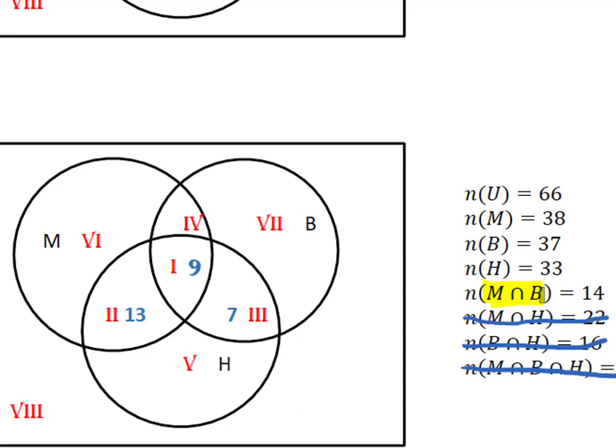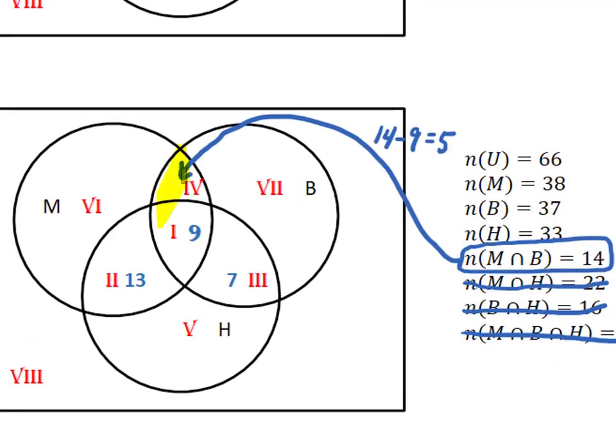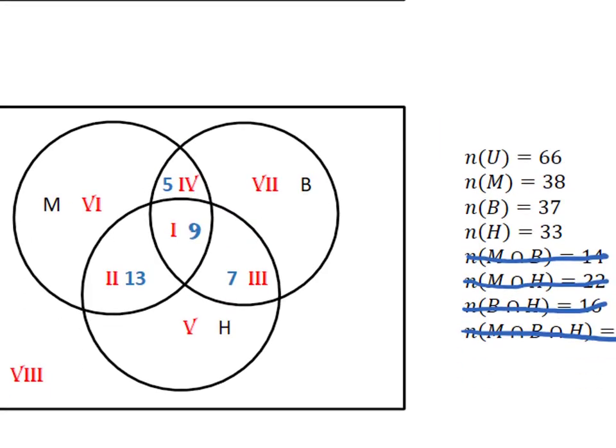Now we're going to focus in on M intersect B. M intersect B is comprised of regions 1 and 4. But we know that M intersect B has 14, 9 of which were already labeled in region 1. So 14 minus 9 equals 5 left in region 4. Label that region 4 to have 5 elements. Cross off the fact that we just used.